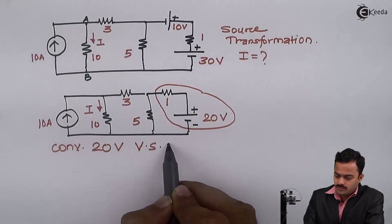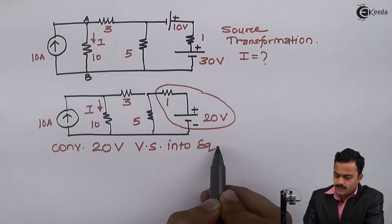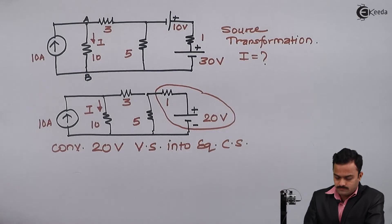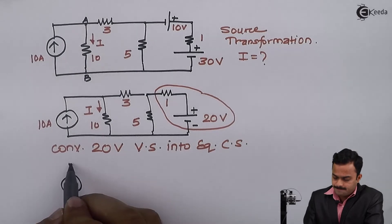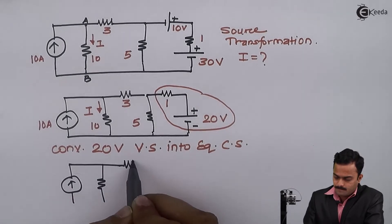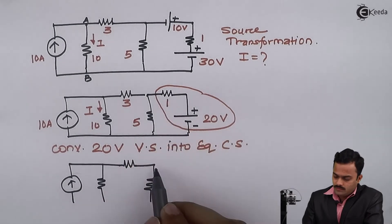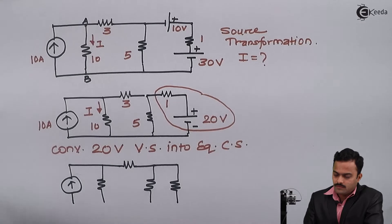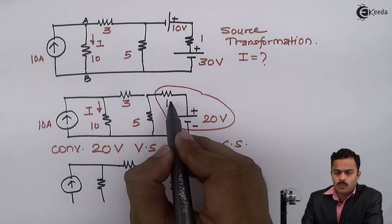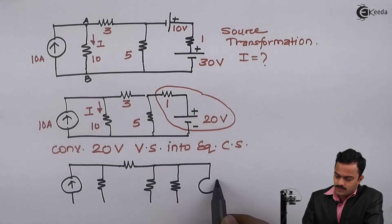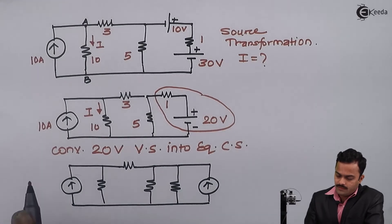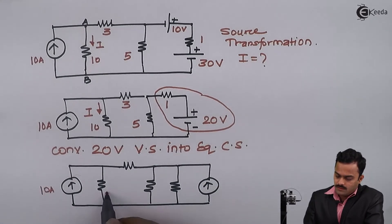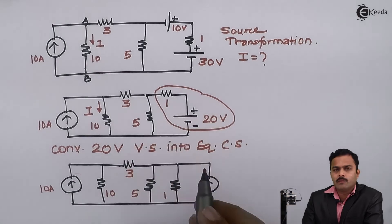Now I can convert this 20 volt voltage source into an equivalent current source. The 1 ohm resistor will come in parallel, and the current value will be 20 divided by 1, which is 20 ampere. So the redrawn circuit has: 10 ampere, 10 ohm, 3 ohm, 5 ohm, 1 ohm in parallel with a 20 ampere current source.